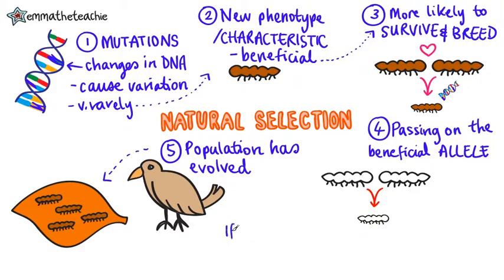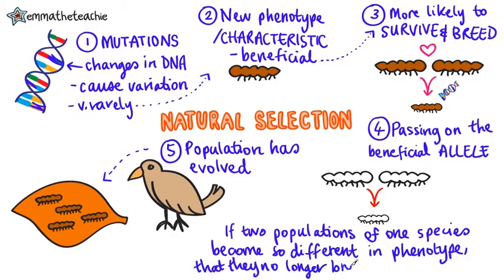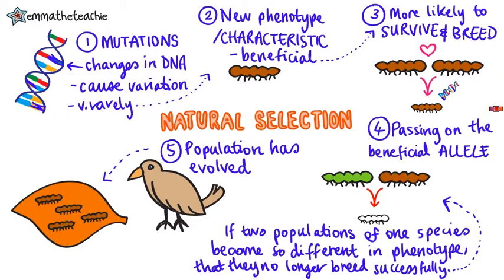If two populations from the same species become so different in their phenotype that they can no longer breed successfully to produce fertile offspring — like the green and the brown population of caterpillars — we say we've got a new species.